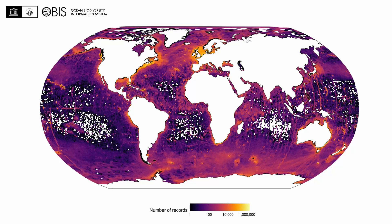In addition to the more than 100 million observations of marine species, the OBIS database now also hosts 180 million measurements and facts, as well as 20 million DNA sequences. Of course, we want these rich datasets to be interoperable, for which we rely on the FAIR guiding principles.